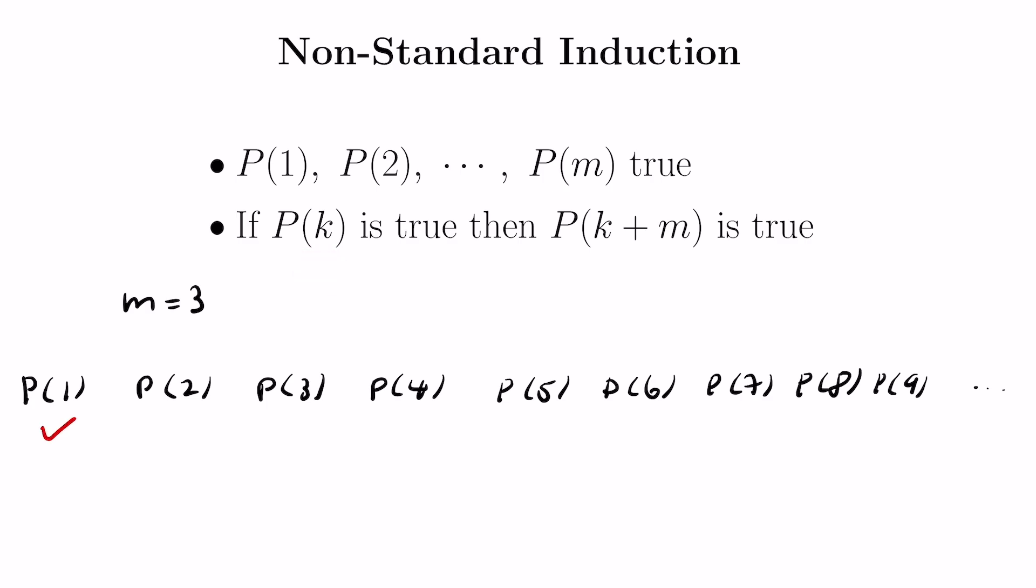First we would know that p of 1, p of 2, and p of 3, the first three statements, are actually true. Then if we apply this with k equals 1, we'd get that since p of 1 is true, then p of 1 plus m, which is 4, is true as well. So when we have this being true, we get this is true.